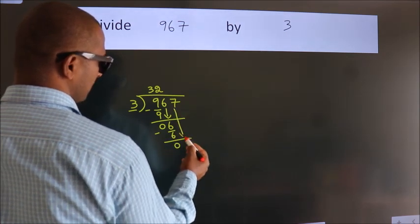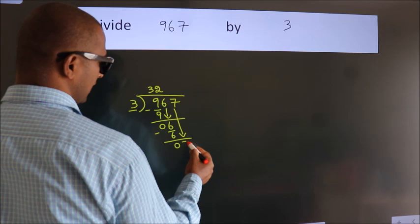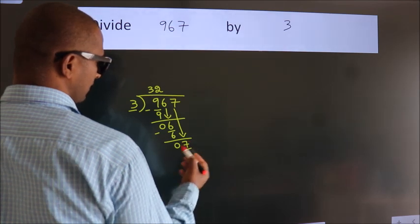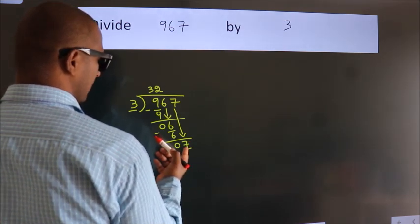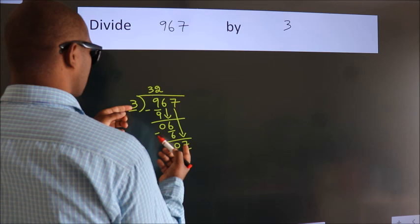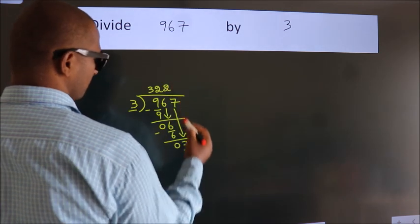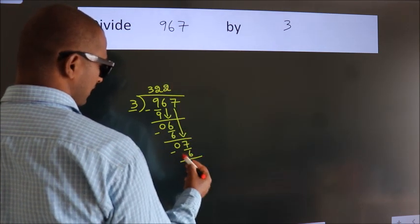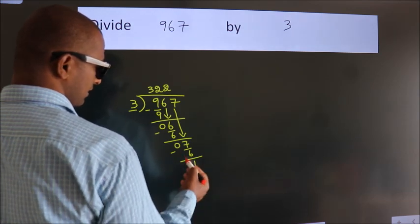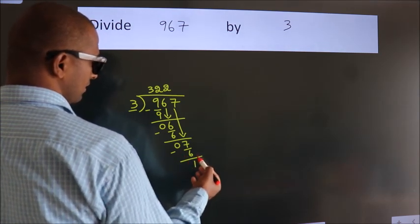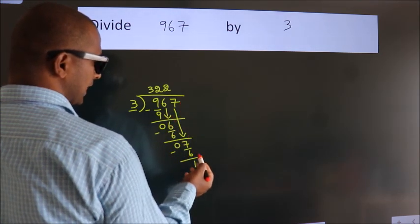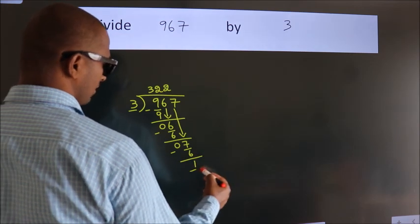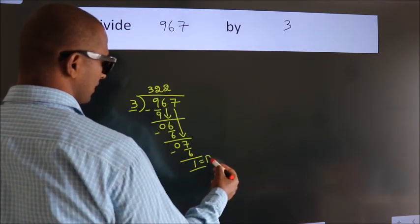So, after this, bring down the beside number. So, 7 down. So, 7. A number close to 7. In 3 table is 3 2s, 6. Now, we subtract. We get 1. After this, no more numbers to bring it down. So, we stop here. This is our remainder. This is our quotient.